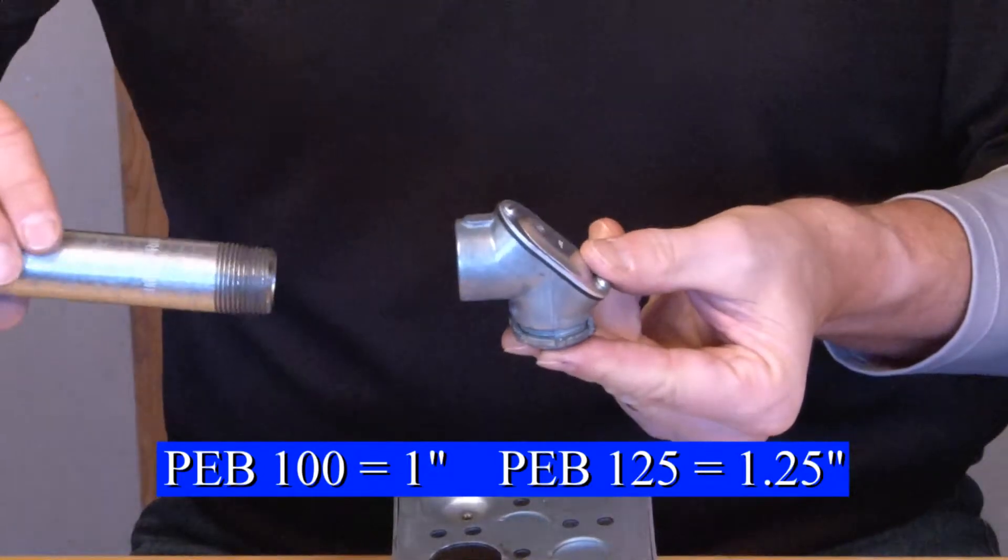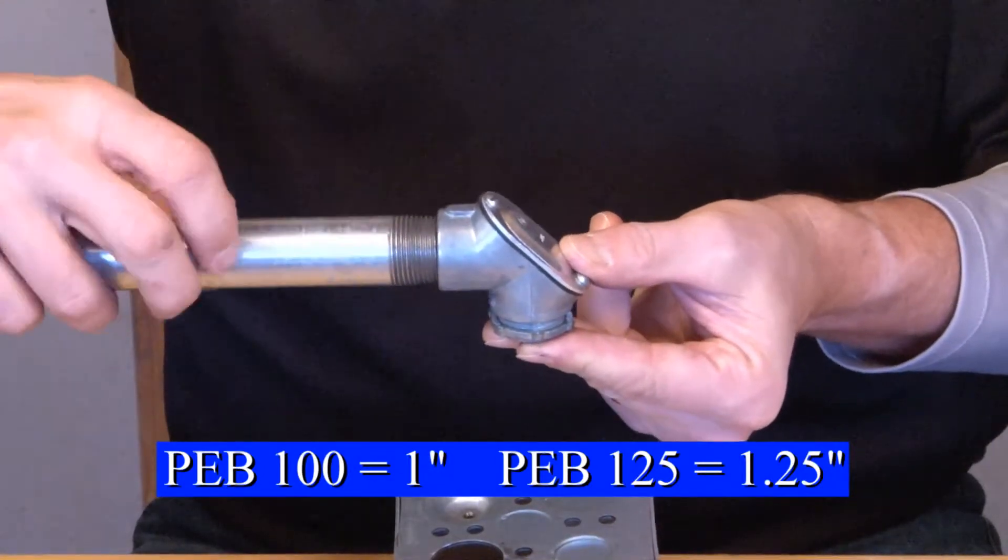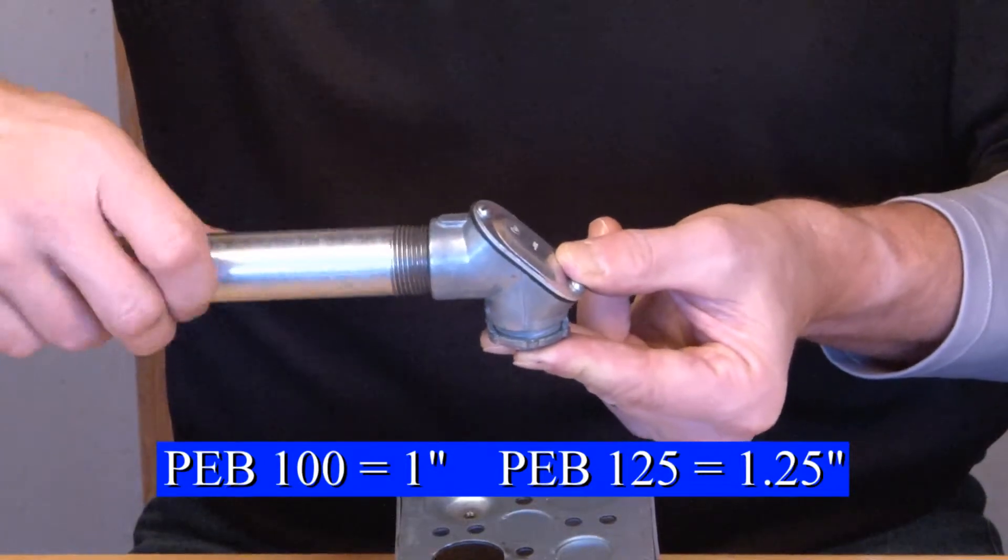Take your threaded rigid conduit, slide it into the threaded portion and turn, thereby securing the conduit to the fitting.